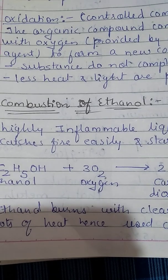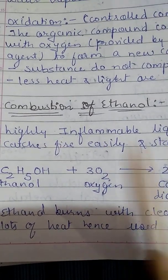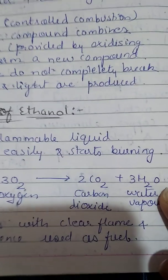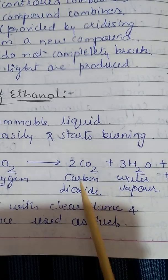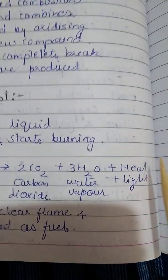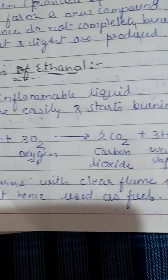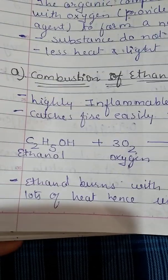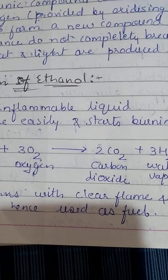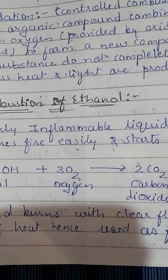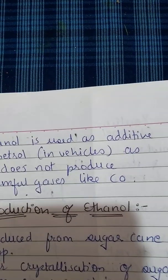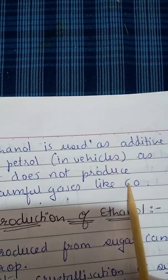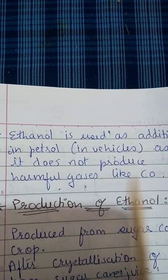Combustion of ethanol: ethanol is a highly inflammable liquid and it catches fire easily. In the presence of oxygen, ethanol forms carbon dioxide, water vapor, heat and light. Ethanol burns with a clear flame, meaning complete fuel is used and it generates lots of heat. Ethanol is used as an additive in petroleum for vehicles, as it does not produce harmful gases like carbon monoxide.